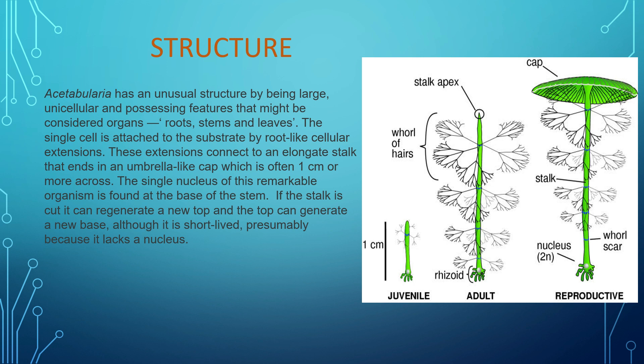Acetabularia has an unusual structure, being a large unicellular organism possessing features that might be considered organs — roots, stems, and leaves. It is quite unique among algae. It is a single cell attached to the substratum for shelter and protection by a root-like structure called rhizoids. These extensions connect to an elongated stalk, which ends at the umbrella-like structure called the cap, which often varies in size from one centimeter or more.